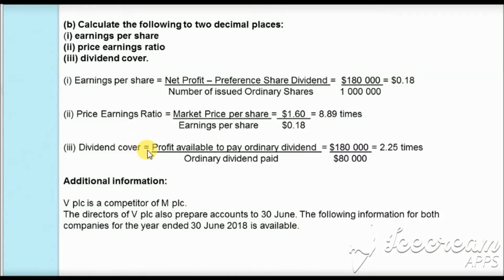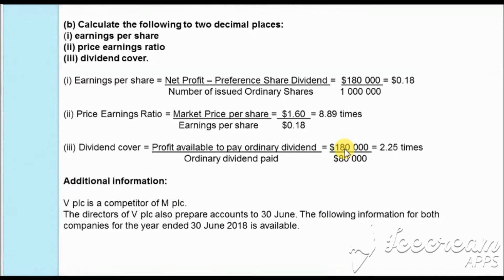Then dividend cover. Dividend cover equals profit available to pay the ordinary shareholders divided by the ordinary dividend paid. As we don't have preference shares here, the total profit is available for ordinary shareholders. So we take the profit for the year, $180,000, divided by the ordinary dividend paid of $80,000, giving dividend cover as 2.25 times.